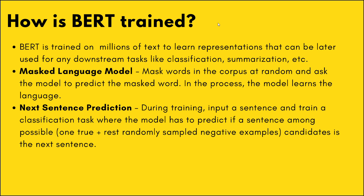Another way to train BERT is Next Sentence Prediction. You input a sentence into BERT and ask which of the following proposed candidates could be the next possible sentence. One of the candidates is the actual next sentence, while others are randomly sampled negative examples. In this way, BERT learns the language.